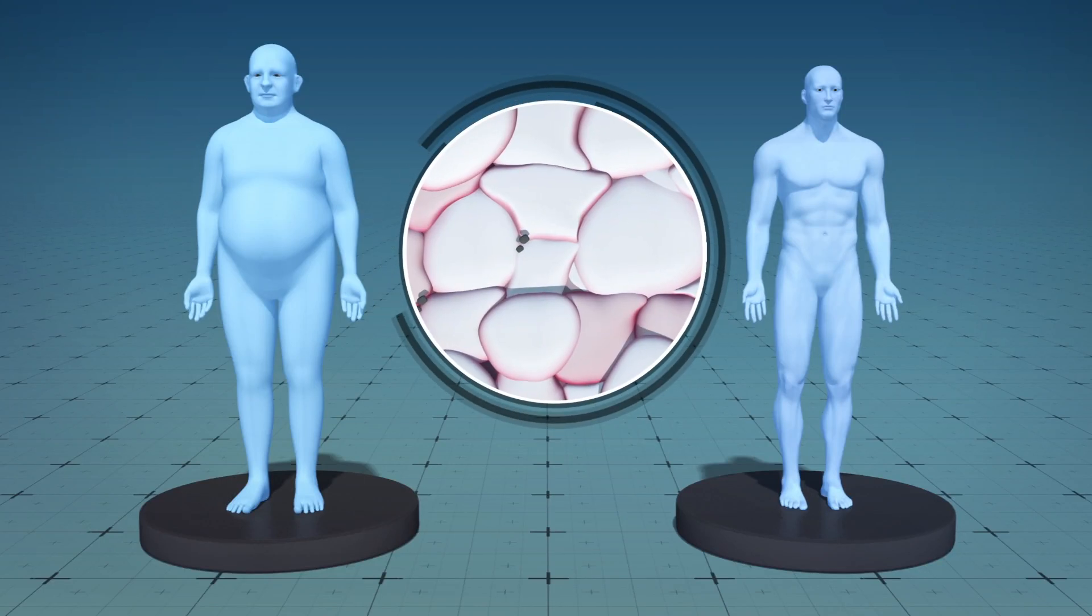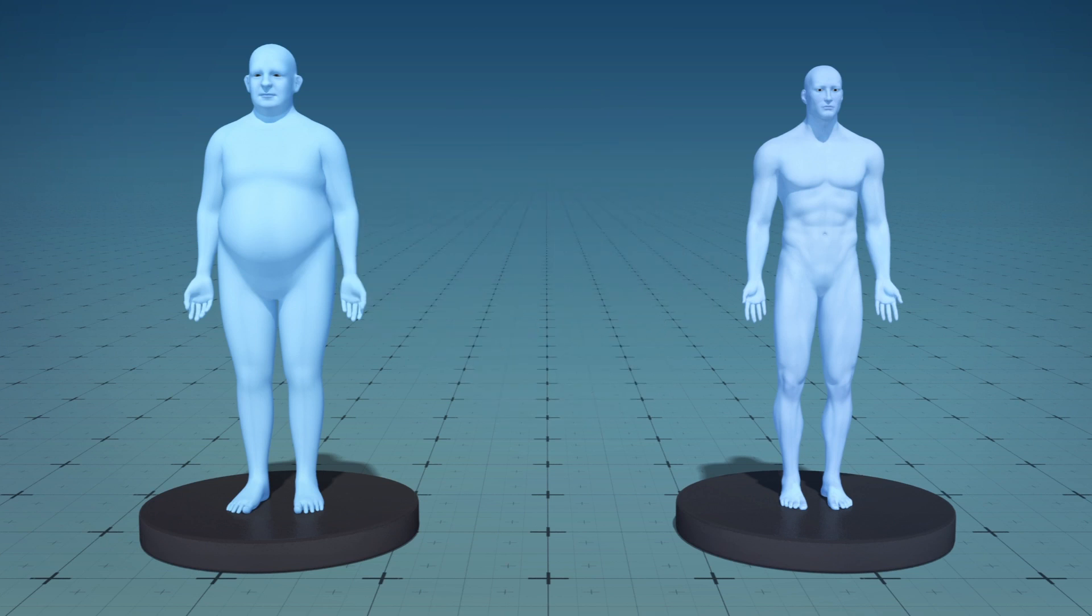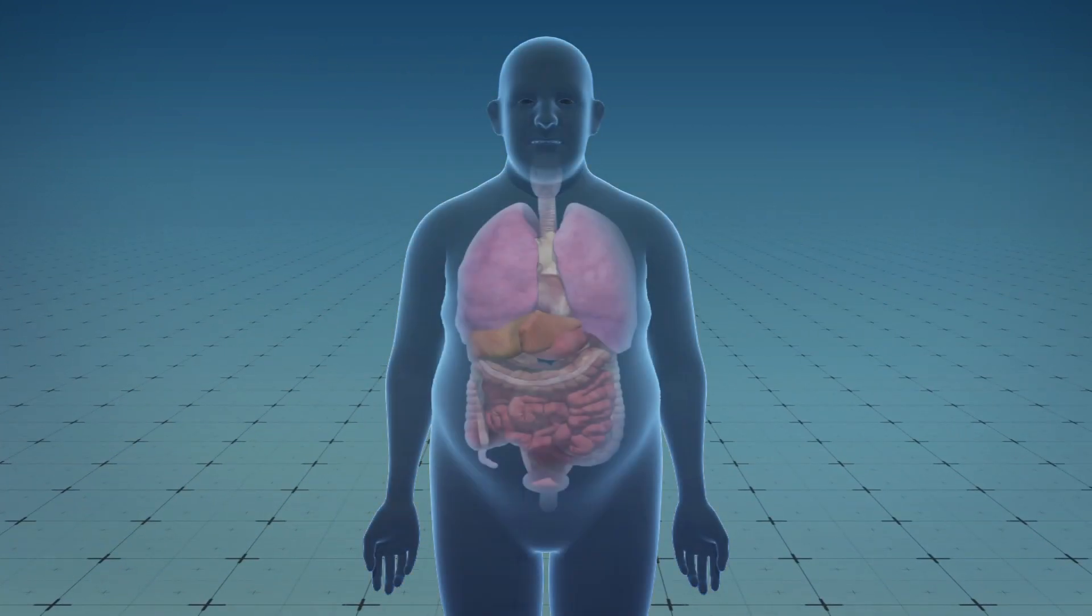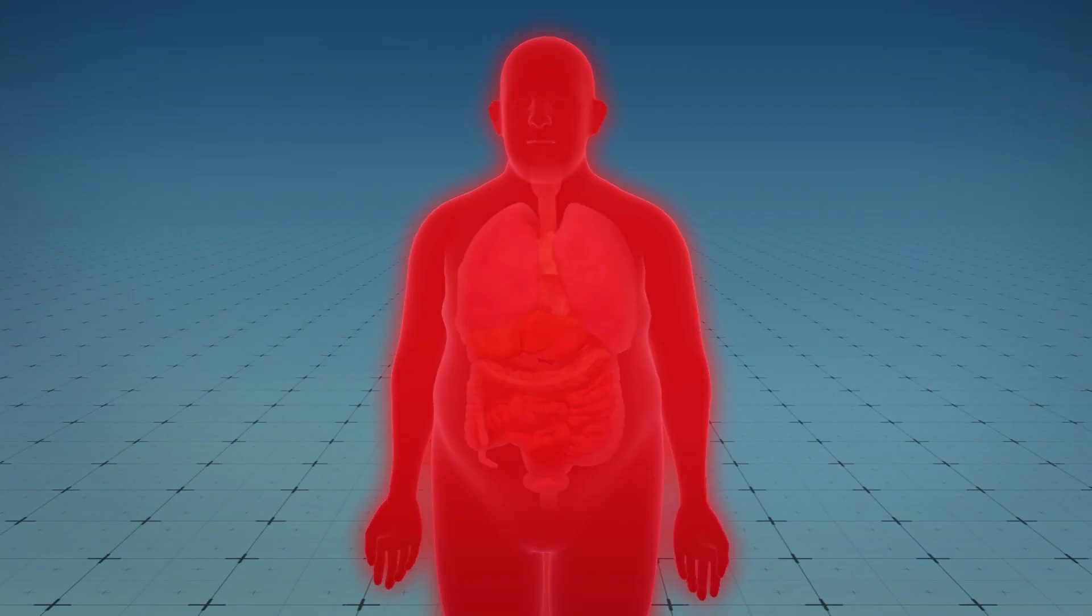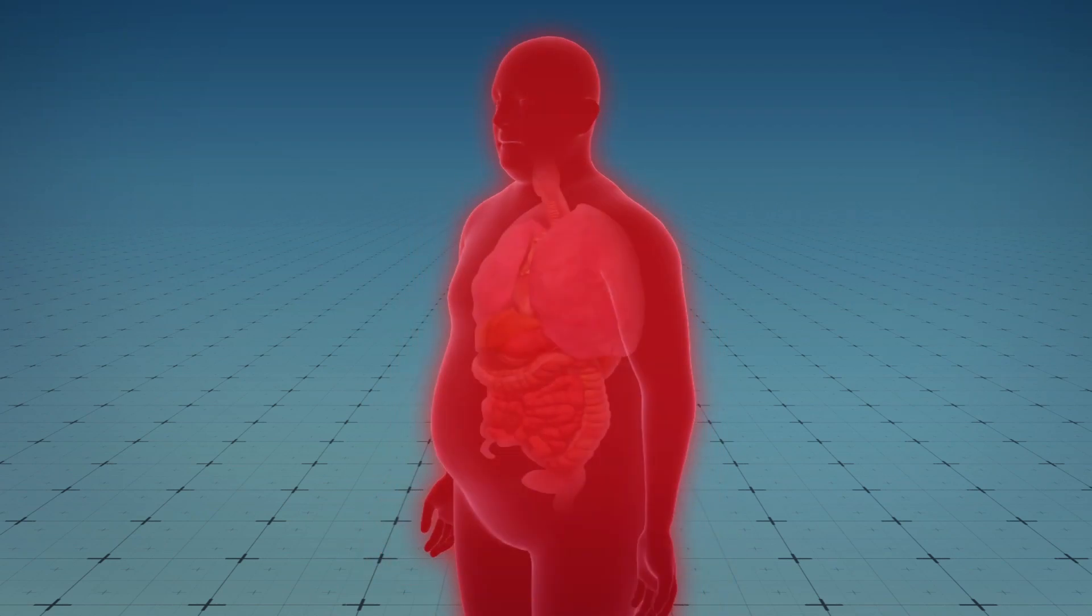Humans have two types of fat, white and brown. White fat stores energy and acts as a thermal insulator. However, excessive amounts could lead to diabetes, heart disease, and certain types of cancer.